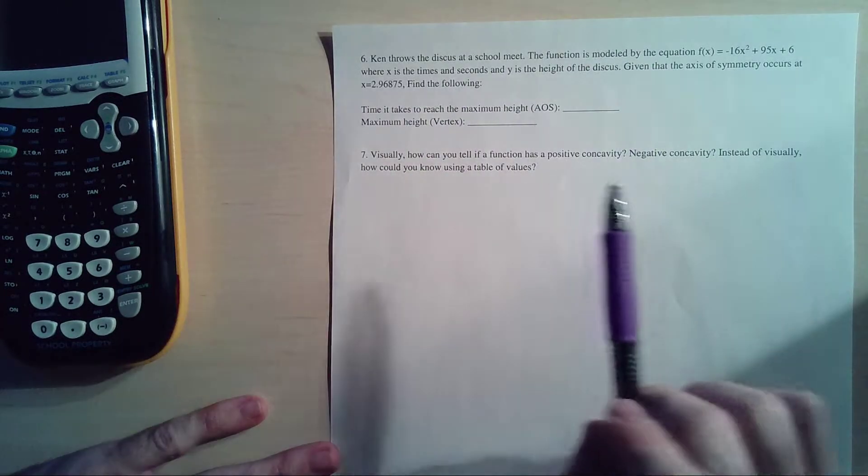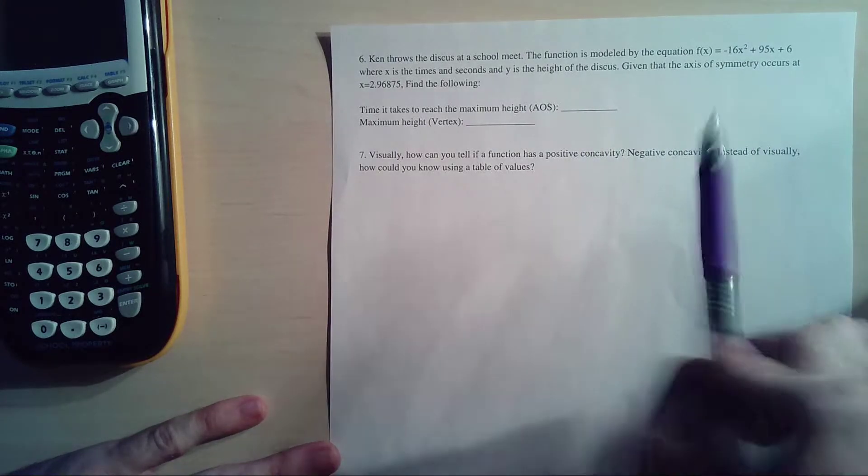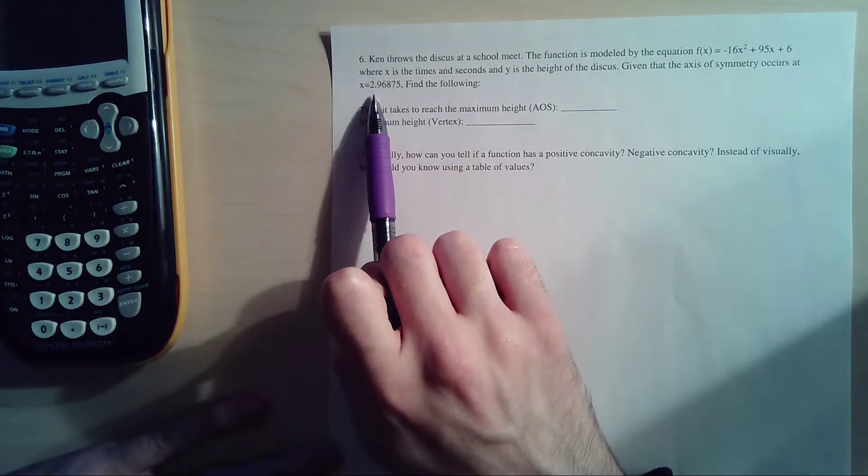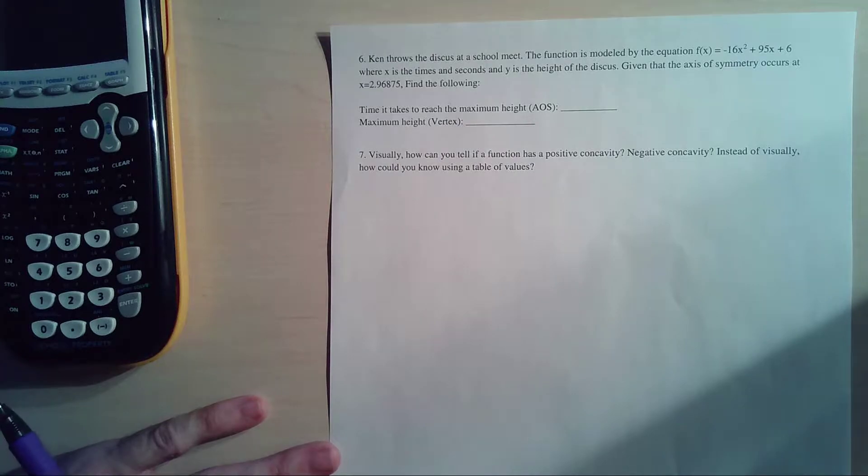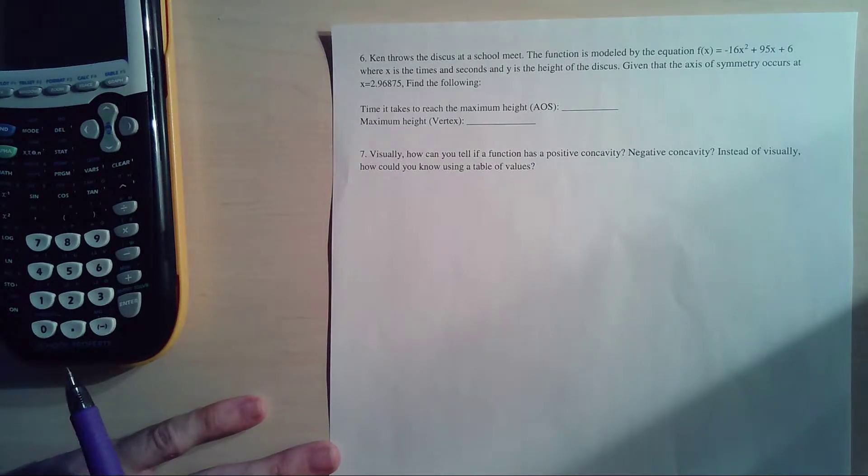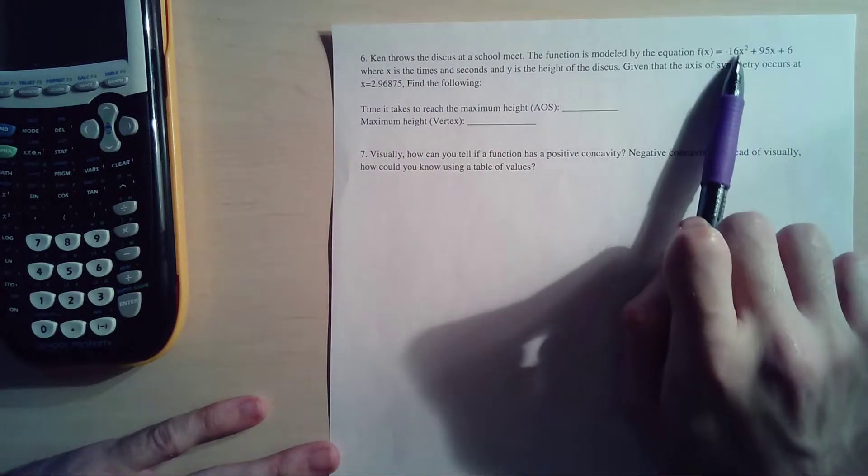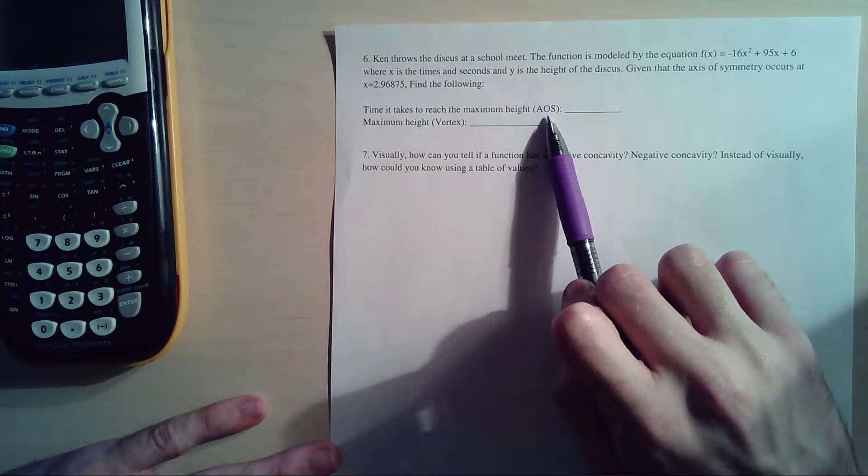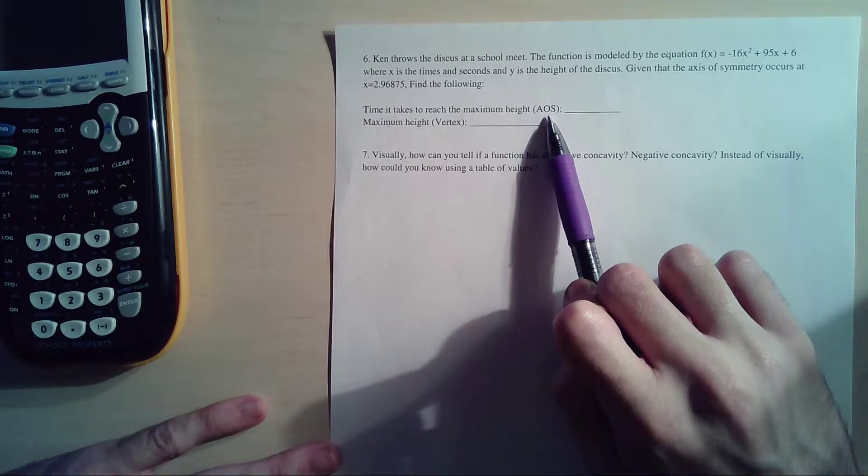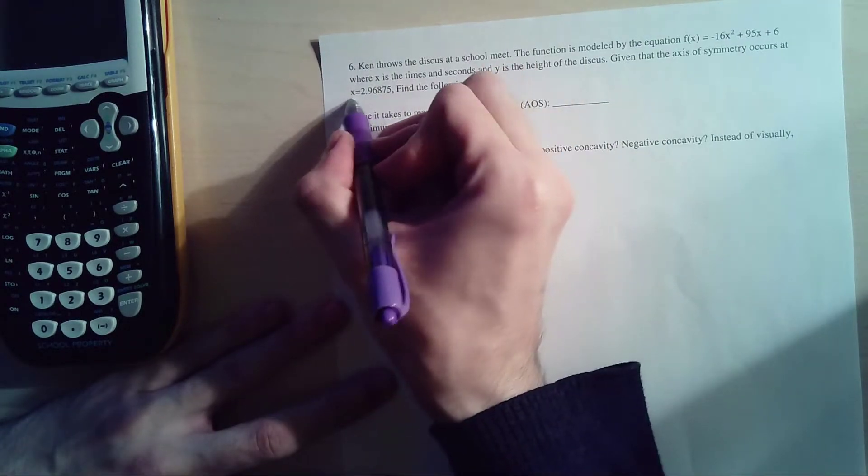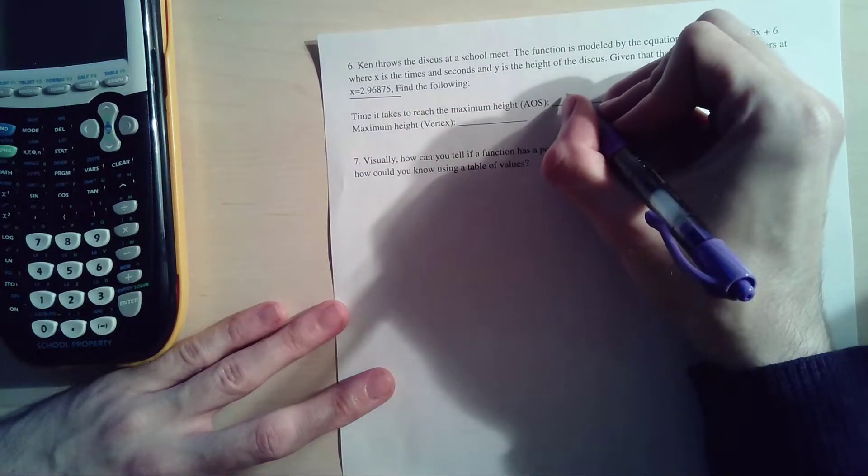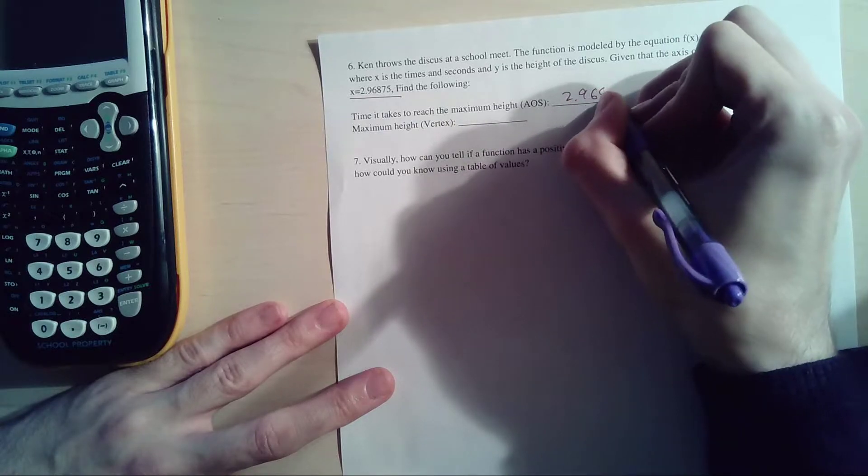Given that the axis of symmetry occurs at x equals 2.96875, find the following: the time it takes to reach the maximum height. Well, basically in this situation, the time it takes to reach the maximum height is the axis of symmetry - how long it takes to get up there. It was given to you in the question. You literally just copy this: 2.96875 seconds. Wow, that was not hard.